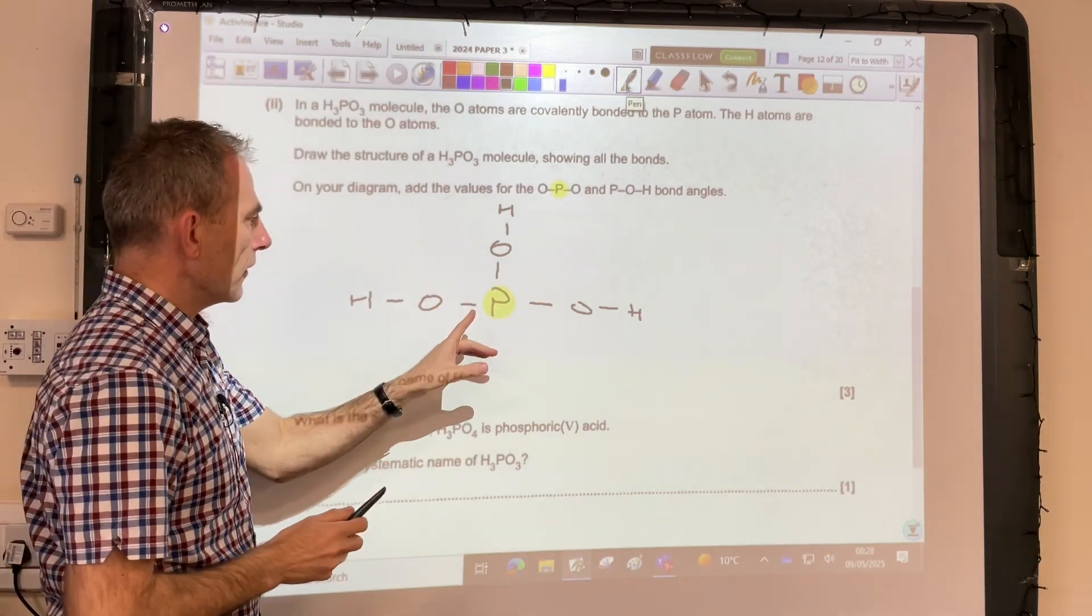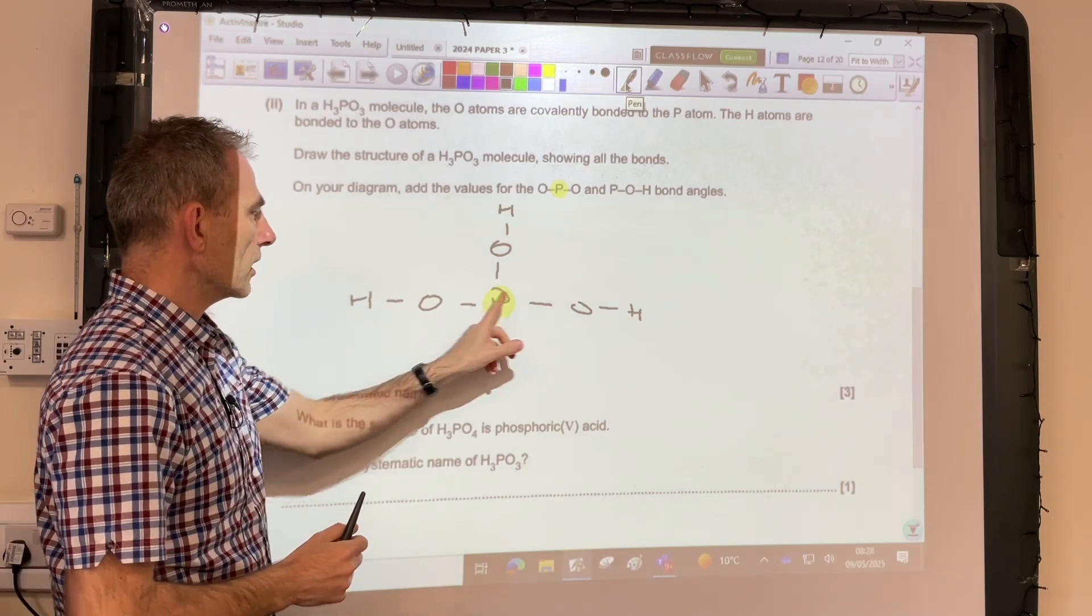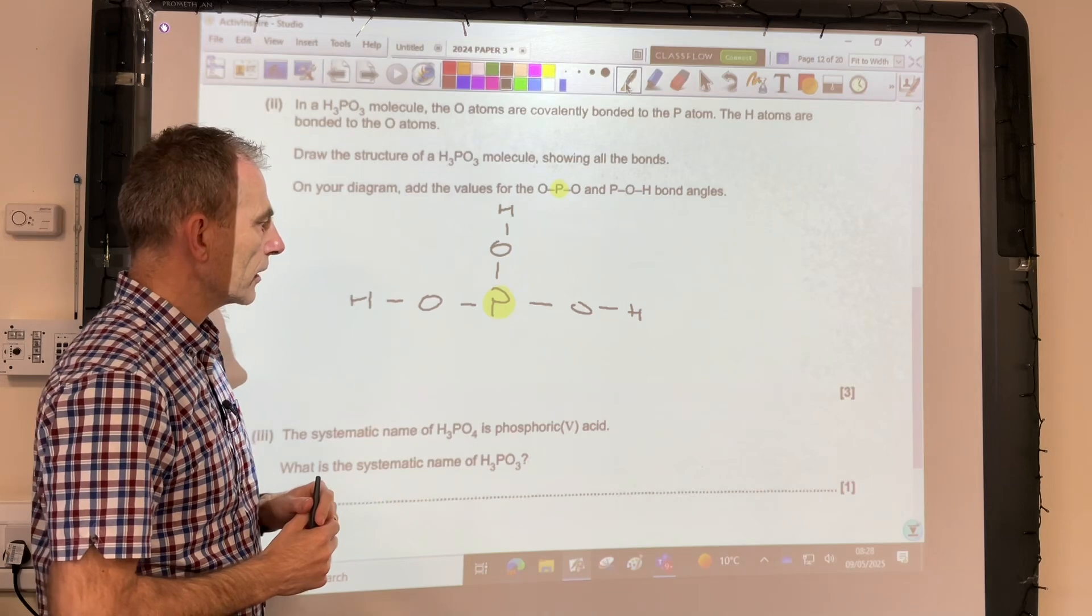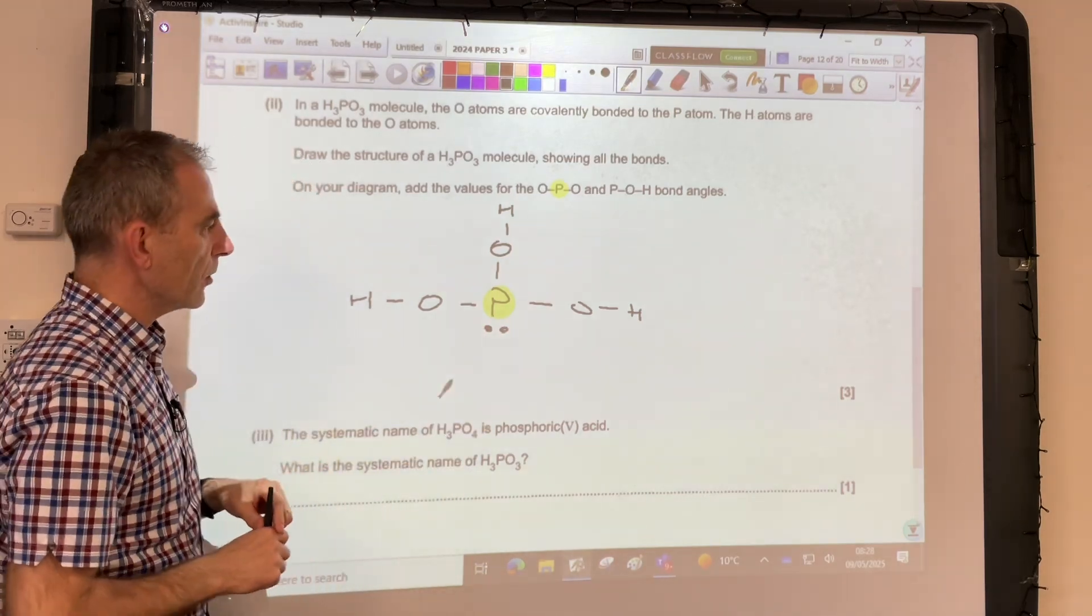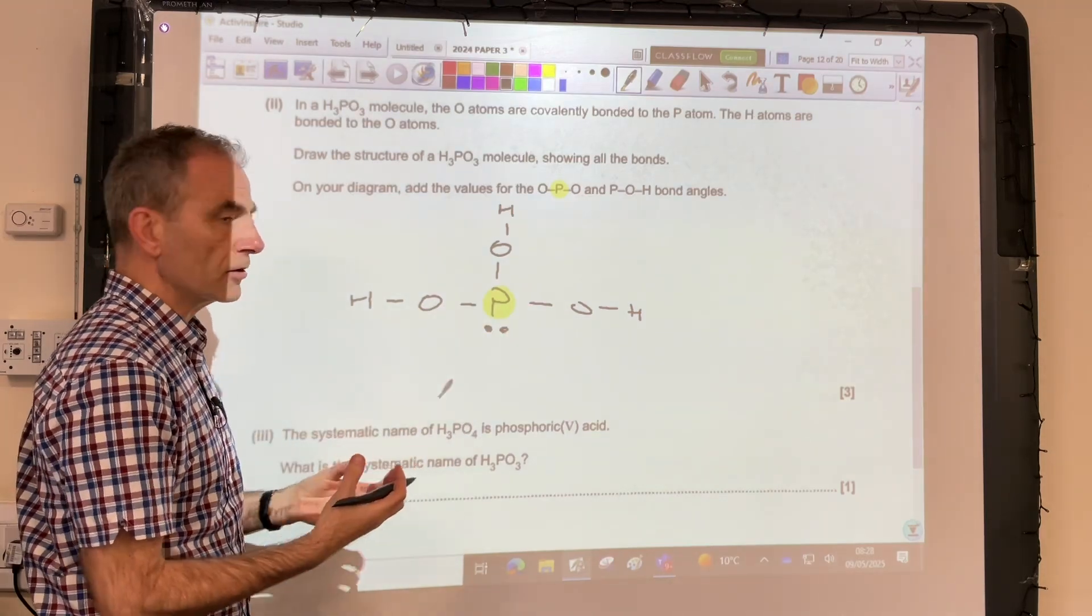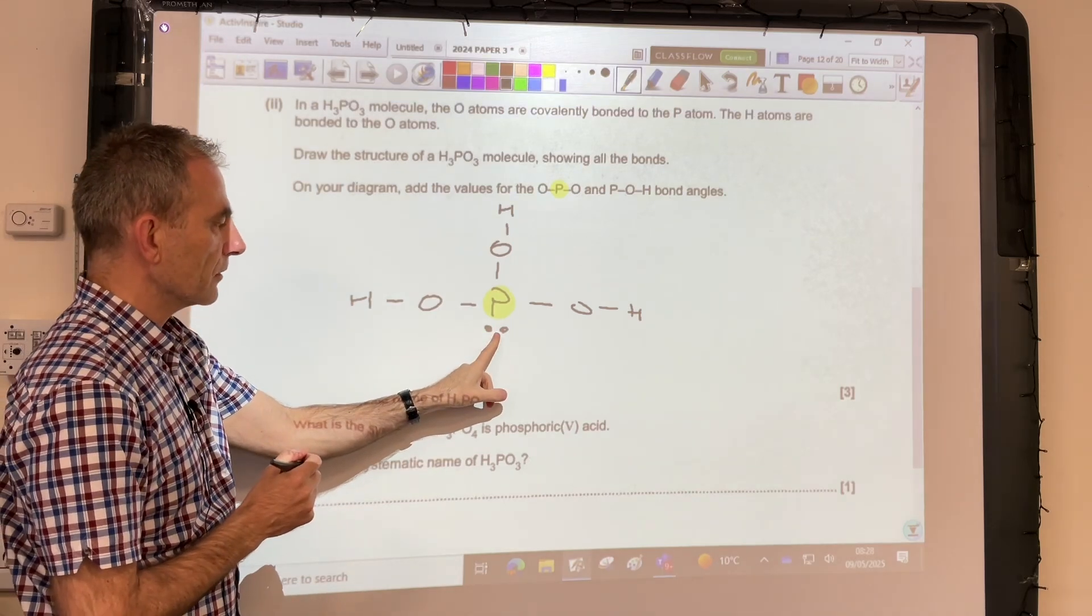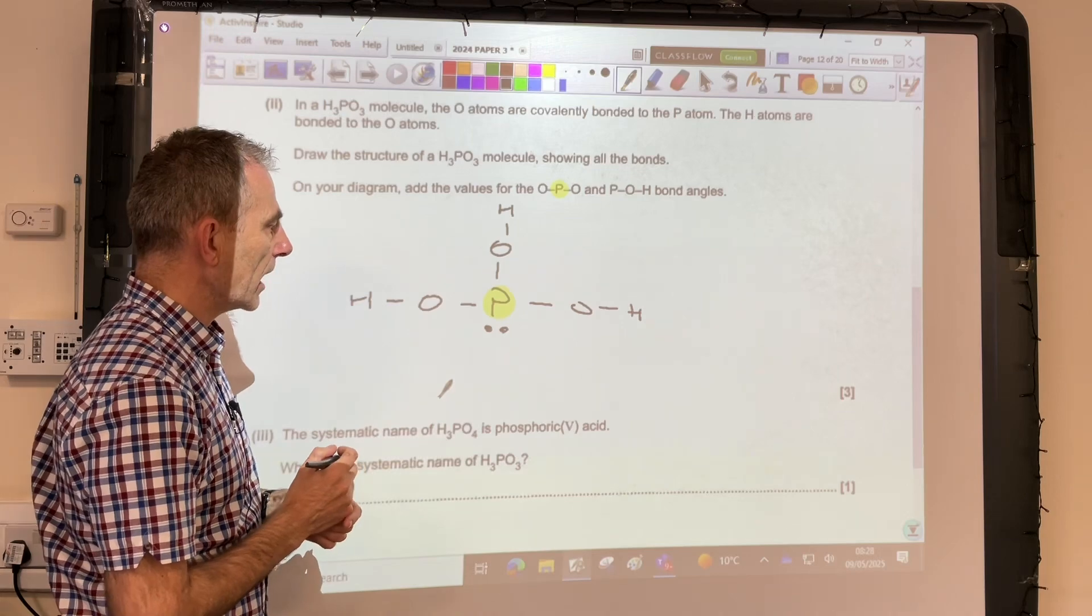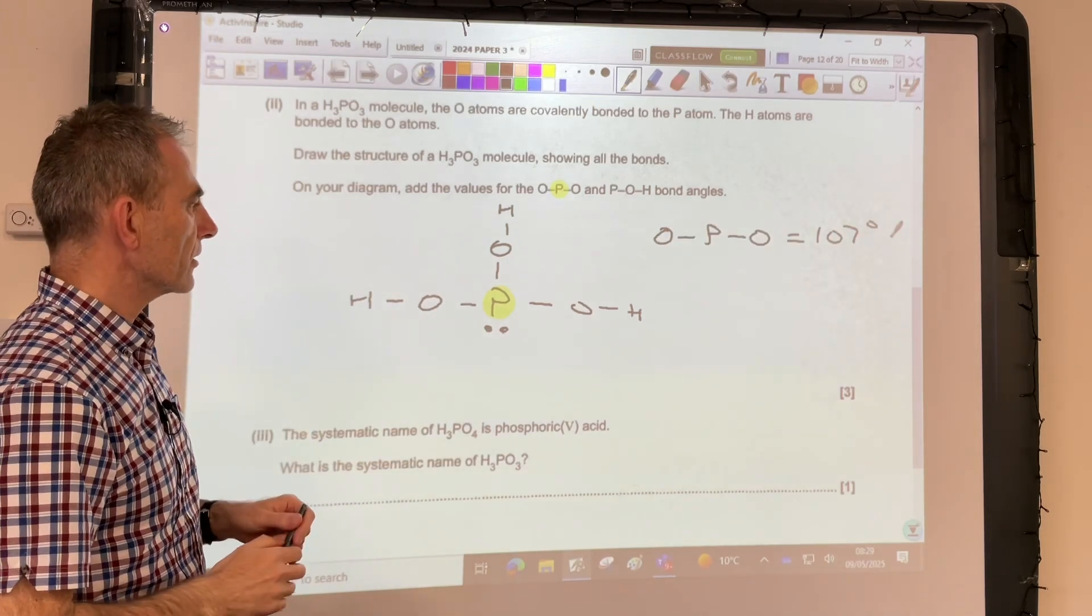So starting with the phosphorus, remember phosphorus is in group 5, it's using 3 of its 5 valence electrons in those 3 single covalent bonds. So there's a lone pair around that phosphorus as well. So we've got 4 regions of electrons, so the starting angle is 109.5, but we take 2.5 degrees off for the extra repulsion from the lone pair. So that means that the OPO angle is 107 degrees.